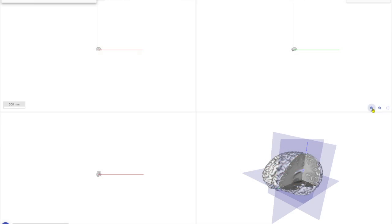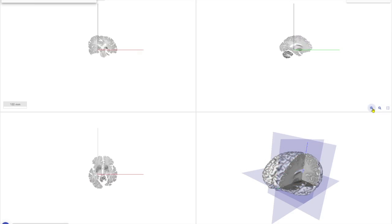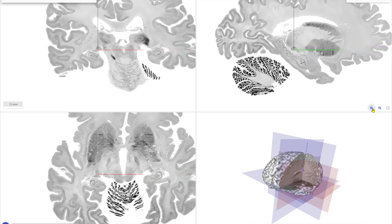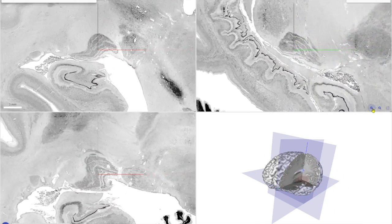We create high-resolution cytoarchitectonic maps in the BigBrain dataset. The BigBrain dataset helps us understand the structure of complex subcortical nuclei. To map these subcortical nuclei, we make use of novel deep learning-based approaches.